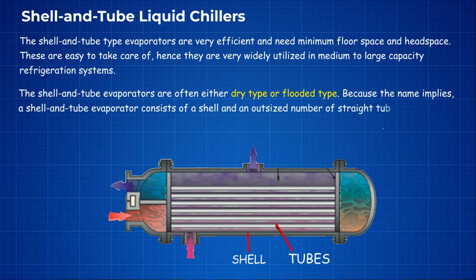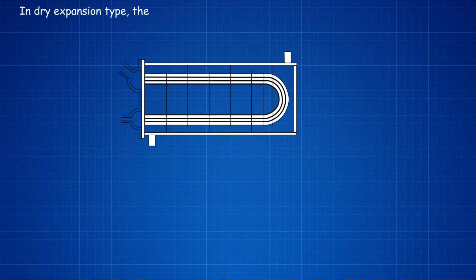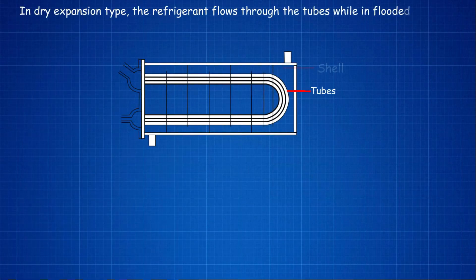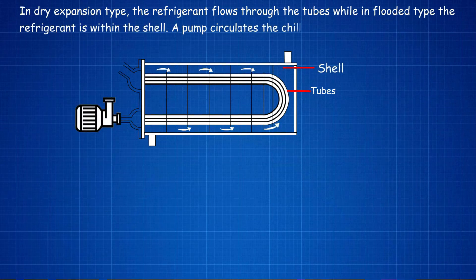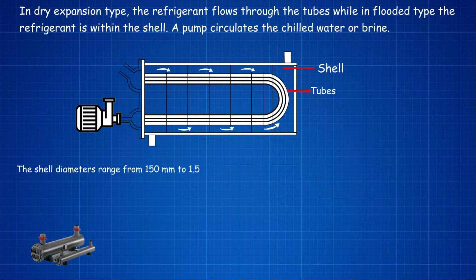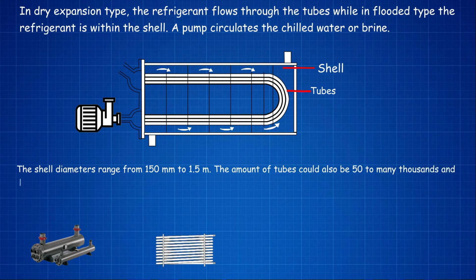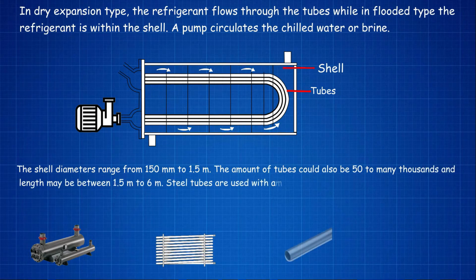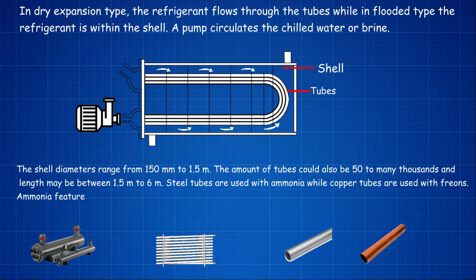A shell and tube evaporator consists of a shell and a large number of straight tubes arranged parallel to each other. In the dry expansion type, the refrigerant flows through the tubes, while in the flooded type the refrigerant is within the shell. Shell diameters range from 150 millimeters to 1.5 meters, with 50 to many thousands of tubes, and lengths between 1.5 meters to 6 meters. Steel tubes are used with ammonia, while copper tubes are used with freons.